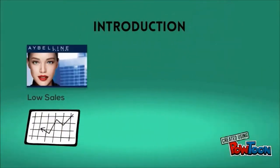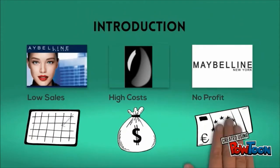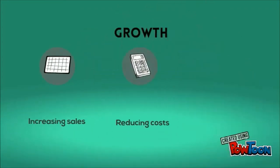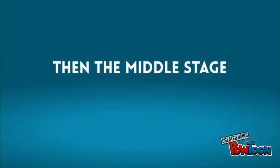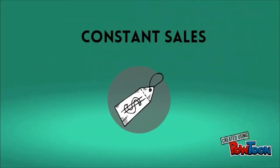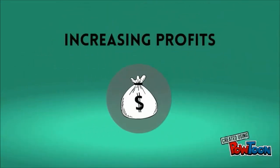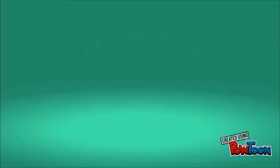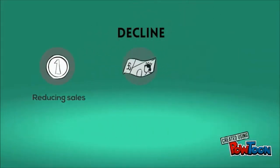Product life cycles are typically divided into four stages. The first stage is introduction — a period of low sales as the product is introduced in the market, with high costs and non-existent profits. Then comes growth, a period of rapid market acceptance where sales increase, costs reduce, and profits improve. Next is maturity, where sales slow down or remain constant, costs reduce, and profits stabilize. The last stage is decline, where sales reduce, costs become constant, and profit erodes.